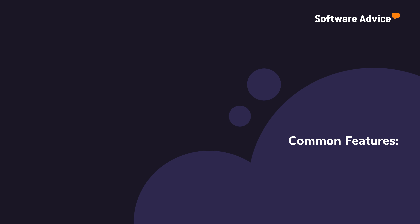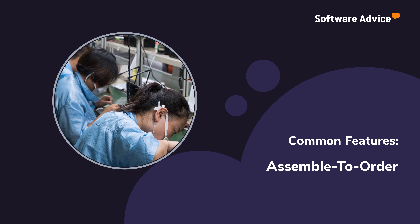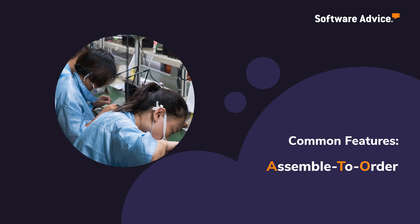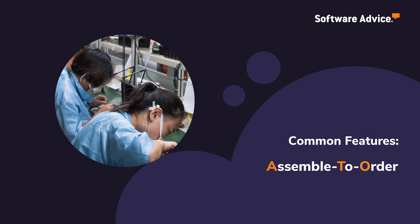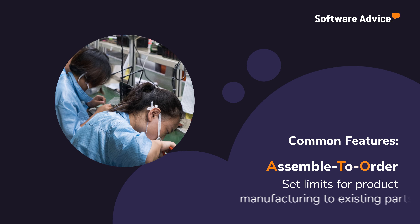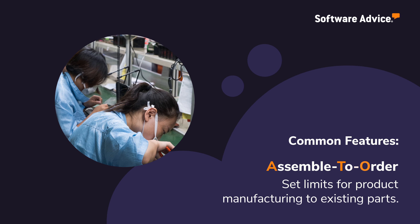Common features of Order Fulfillment Software include Assemble to Order, or ATO, for users building a product from existing parts, allowing them to set limits on customization of orders.